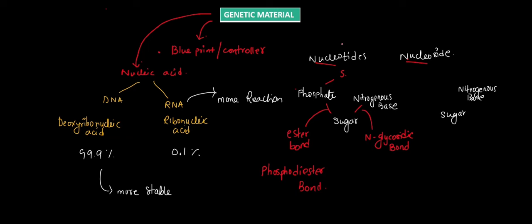Both DNA and RNA — the nucleic acids — are made up of nucleotides, not nucleosides. So genetic material is made up of nucleotides.